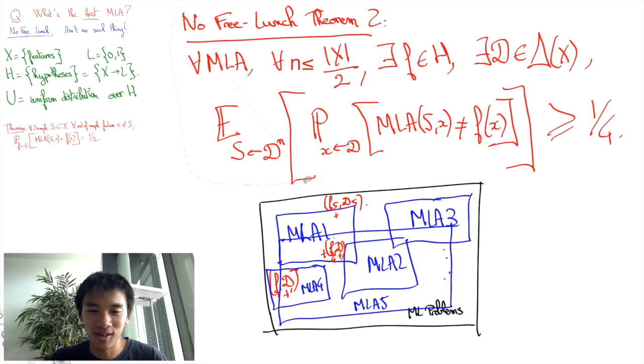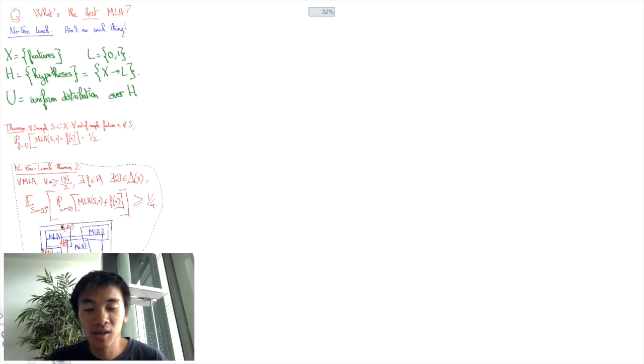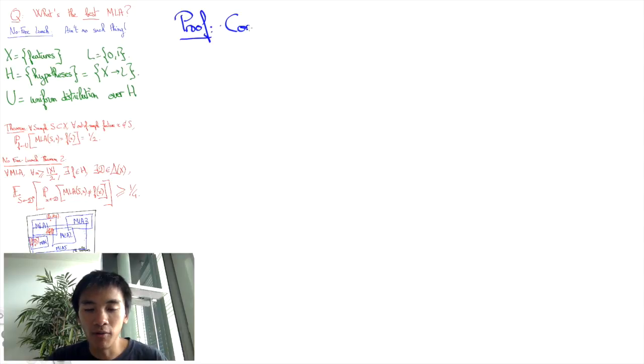Let's get to the proof of this second no-free lunch theorem. First, let us define a subset Y of X of cardinal 2N. This is allowed because we know that the sample size is at most half of the size of the set of features X.